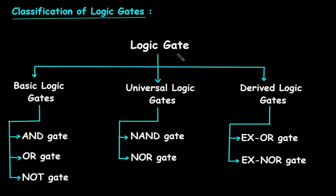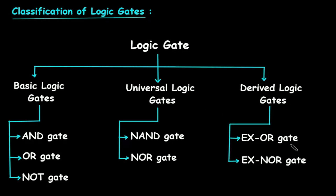Logic gates are classified as basic logic gates, universal logic gates, and derived logic gates. Basic logic gates are further classified as AND gate, OR gate, and NOT gate. Universal logic gates are further classified as NAND gate and NOR gate. Derived logic gates are classified as XOR gate and XNOR gate.